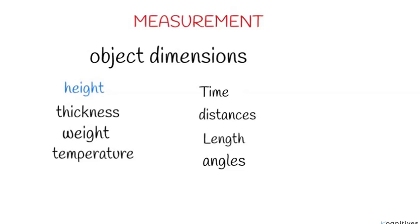When you see a person, the first thing you notice is the person's height — whether they are short or tall. The next thing you notice is the person's mass, whether the person is fat or slim. There's also time, which always moves, and when you walk under the sun, you notice hotness or coldness. All these things around us have their own unique measured values. In taking measurements accurately, there are instruments allocated to each kind of measurement — these devices are called measuring devices or instruments.